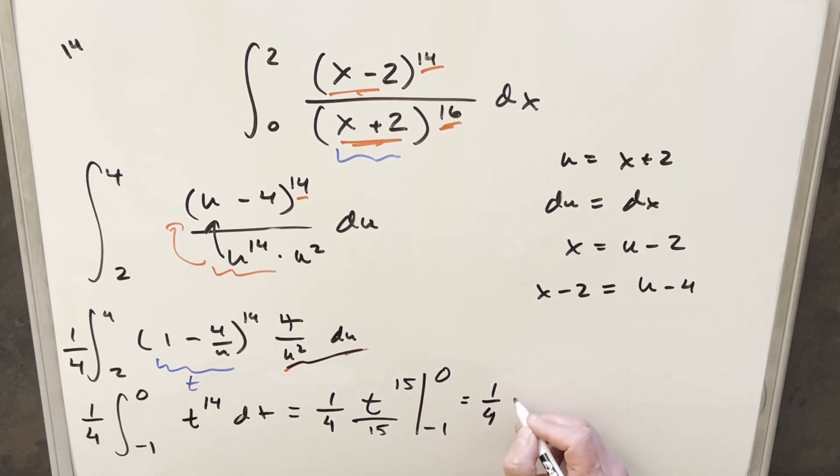Well, evaluating at 0, that's just going to give me a 0. So we'll have that there. Then we're going to have minus. Putting minus 1 in to the 15th, that's just going to be a minus 1 over 15. But minus times minus is plus here, so we just need to distribute in 1/4. And for my final solution on this, we just get 1 over 60.